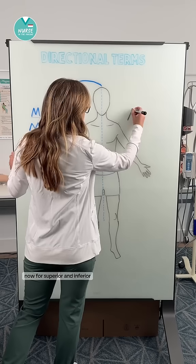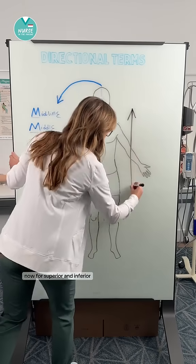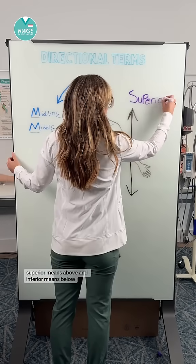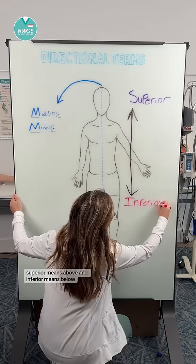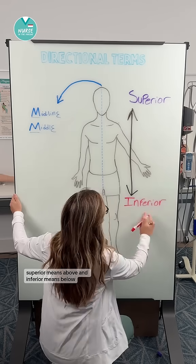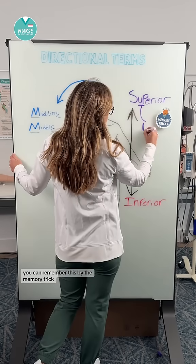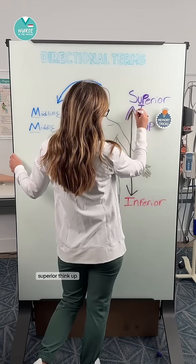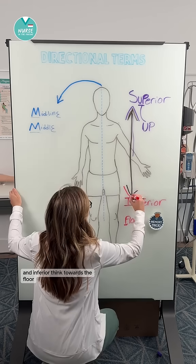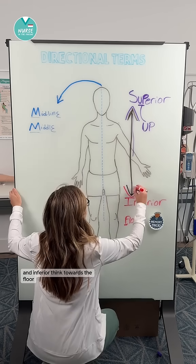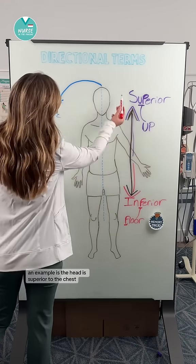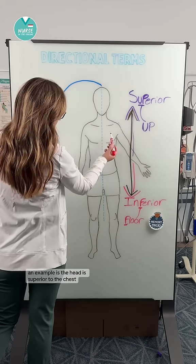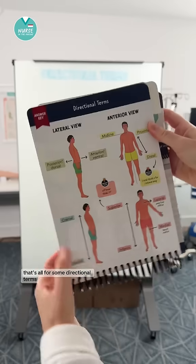Now for superior and inferior. Superior means above and inferior means below. You can remember this with the memory trick: superior, think up; and inferior, think towards the floor. An example is the head is superior to the chest.